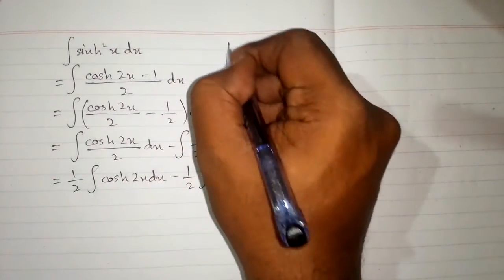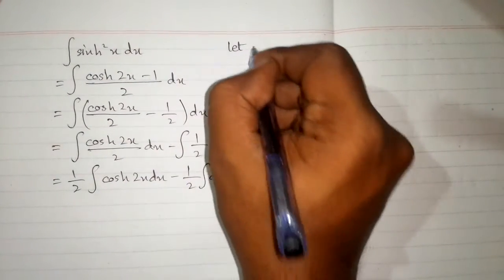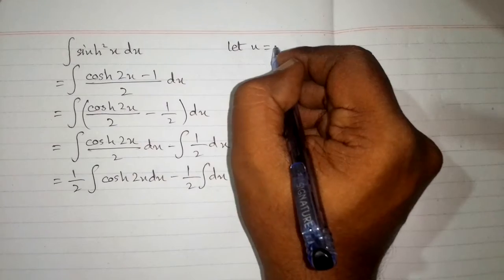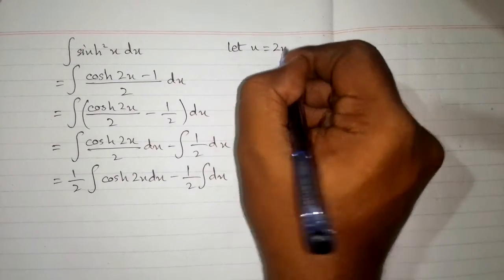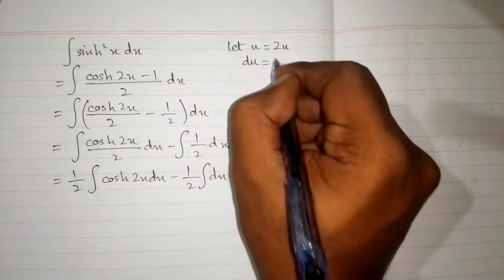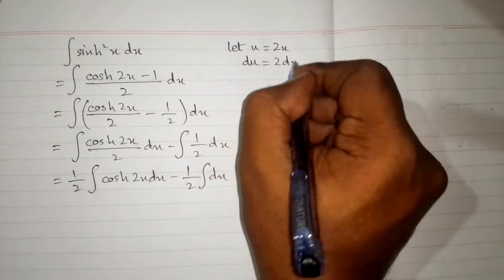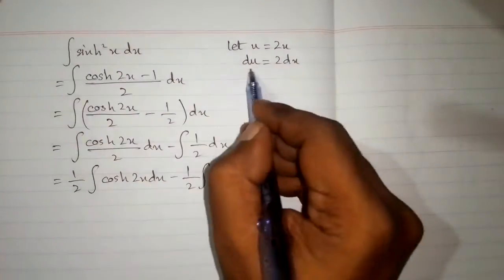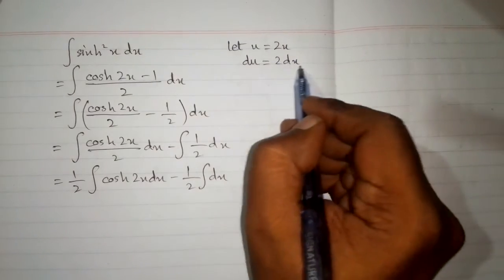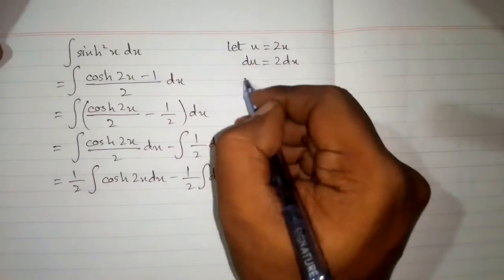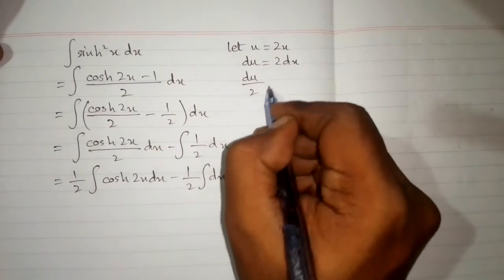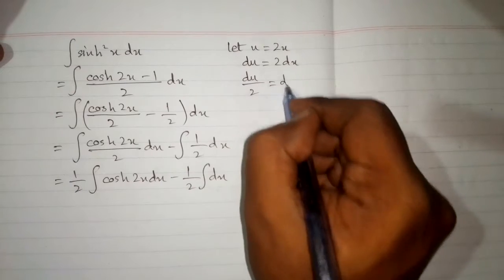Now let u equal 2x. So we have du equal to 2 dx, since du is the differential of this function multiplied by dx. This can be written as du upon 2 is equal to dx.